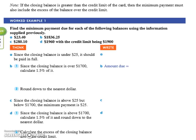In your trial they'll give you a lot of the details — they'll tell you the percentages and things like that. What we're going to do in this one is find the minimum payment for the following balances using the information we just got supplied on the previous page.